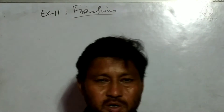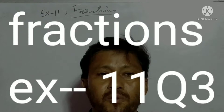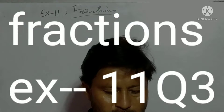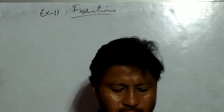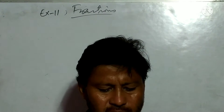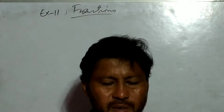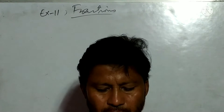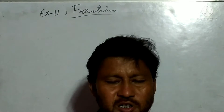Good morning students. Today we will do exercise 11, question number 3. The question is: Chaya cuts 3 meters of cloth into strips of 1/4 meter each. How many strips does she cut?